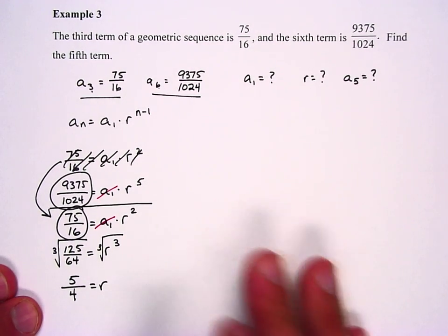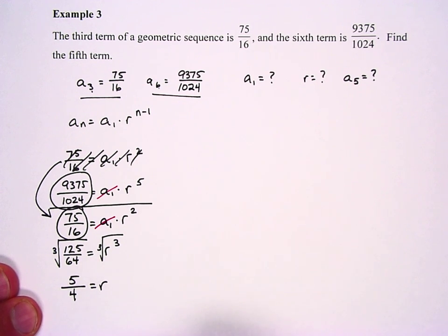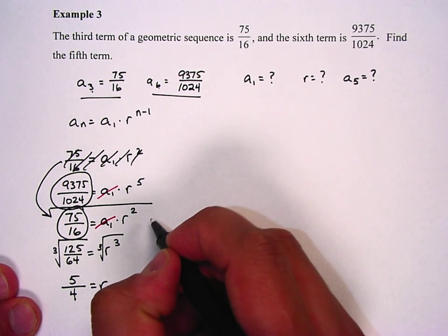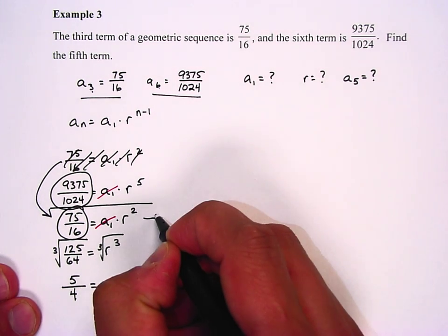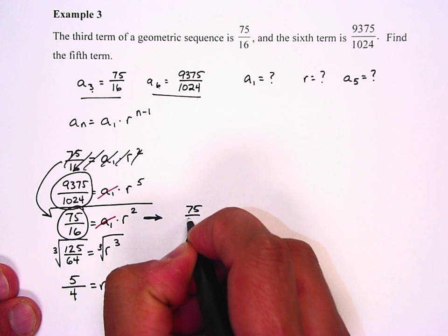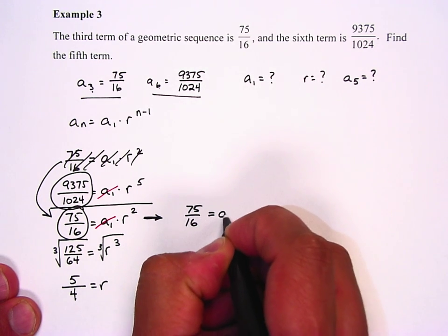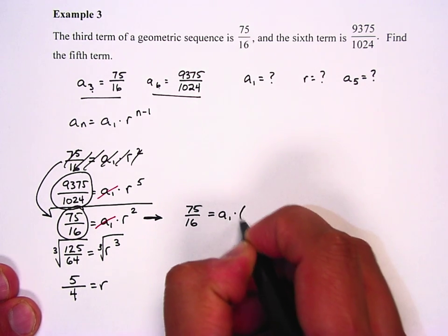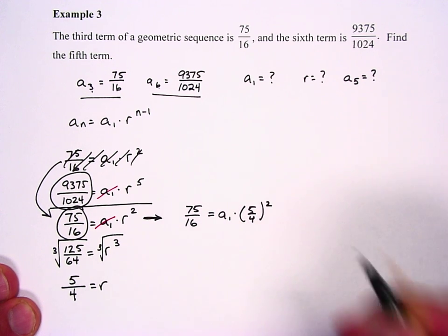Now what we're going to do is we're going to plug it back into one of our equations and see if we can figure out a sub 1. I'm going to choose this equation right here. 75 over 16 equals a sub 1 times 5 fourths to the second power.